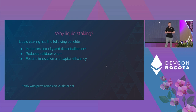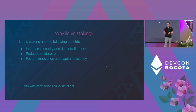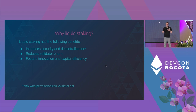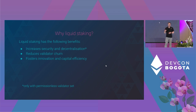Why liquid staking? It's important to know why you're doing this — what benefit does it serve? It turns out there are significant benefits to Ethereum as a whole. Liquid staking encourages greater participation that in turn provides greater security and decentralization — though it only contributes to decentralization if the validator set or node operators are decentralized and not just one entity. Liquid staking facilitates unstaking through the protocol itself or on a secondary market, so it reduces validator churn. It also fosters innovation and capital efficiency through the use of these liquid staking tokens in DeFi.